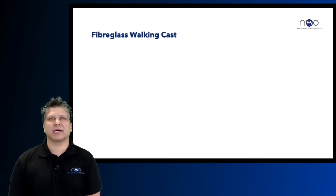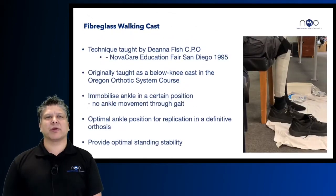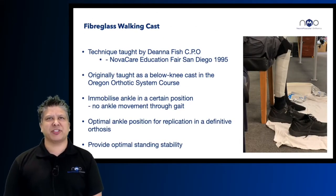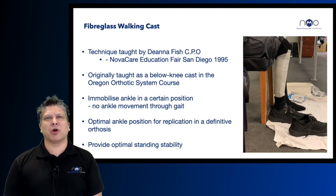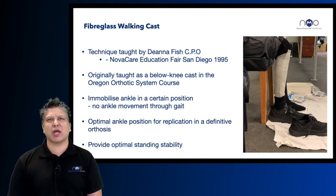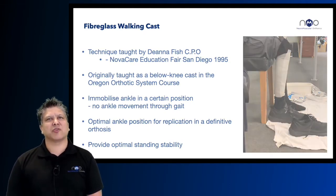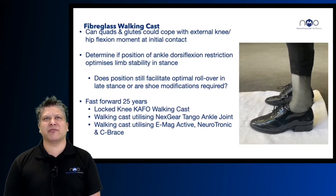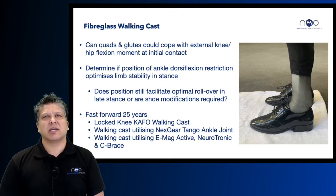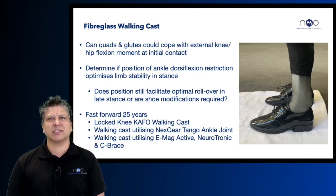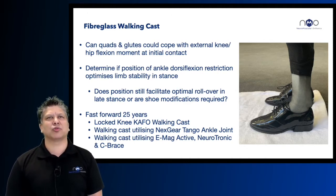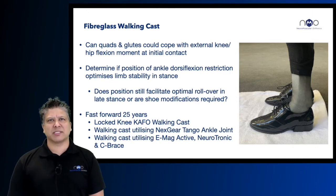This fiberglass walking cast technique was taught by Deanna Fish, a CPO at a NovaCare education fair in San Diego in 1995. Originally taught as a below-knee system for the Oregon orthotic system course, the walking cast immobilises the ankle in a set position, allows for optimal ankle position replication in a definitive orthosis, and tells us if the quads and glutes can cope with an external knee and hip flexion moment at initial contact. It also allows you to determine if the ankle dorsiflexion resistance position optimises limb stability in stance.